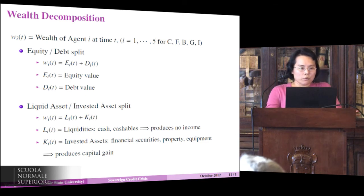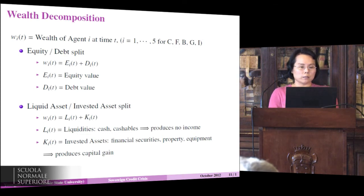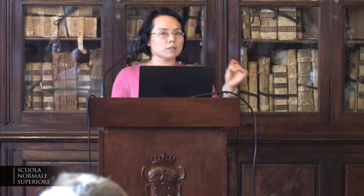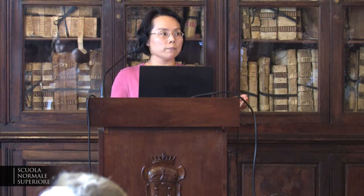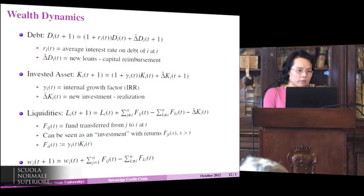We decompose wealth in two ways: the traditional equity-debt split, where E is equity and D is debt — not just risky debt but general debt — and also the liquid assets versus invested assets split. Liquid assets are cash or cashable, producing no income, like money under a mattress. Invested assets earn something — even a little interest or capital gain. We then build dynamics for debt D, invested assets K, and liquidity L. Wealth at time T+1 equals wealth at time T plus cash in minus cash out, where F_IJ is the fund transferred from agent J to agent I at time T.